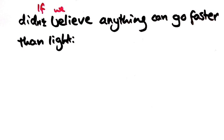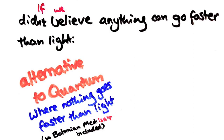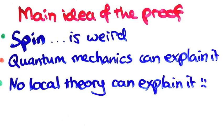Therefore, we'd have to look for an alternative theory where nothing ever acted faster than light. We'll call all theories in this category local theories. What this proof is going to show is that, no matter how cleverly we try, we could never come up with a local theory that could explain spin.